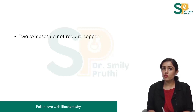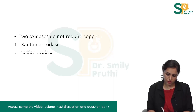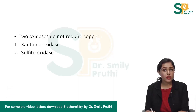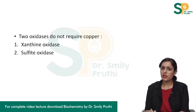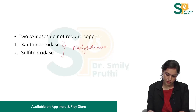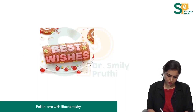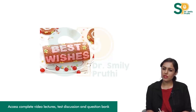There are two oxidases which do not require copper: xanthine oxidase and sulfite oxidase. Both these oxidases require molybdenum. That is it with this topic. Thanks for watching. Best wishes to you.